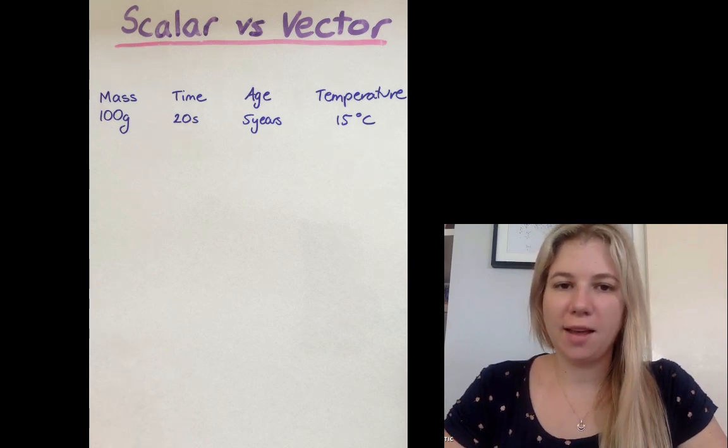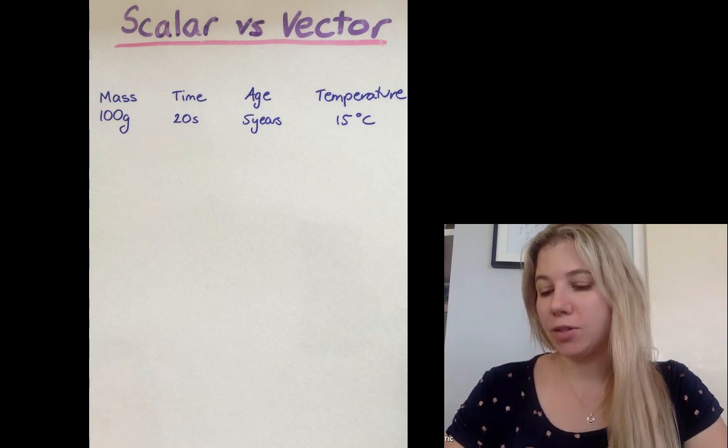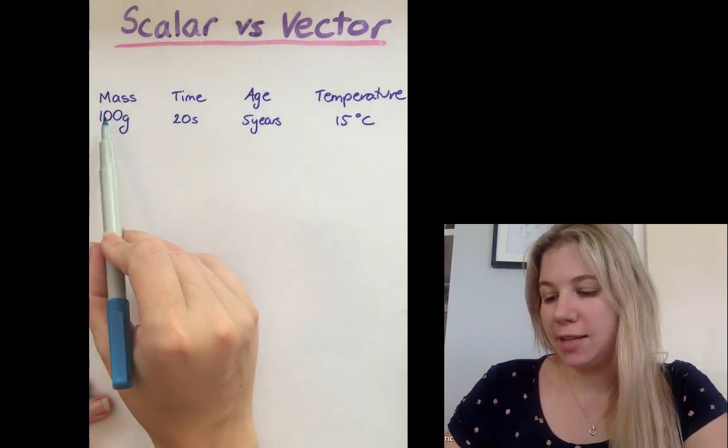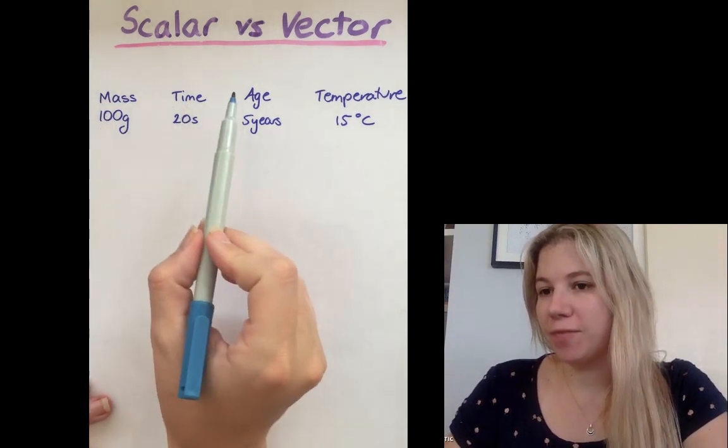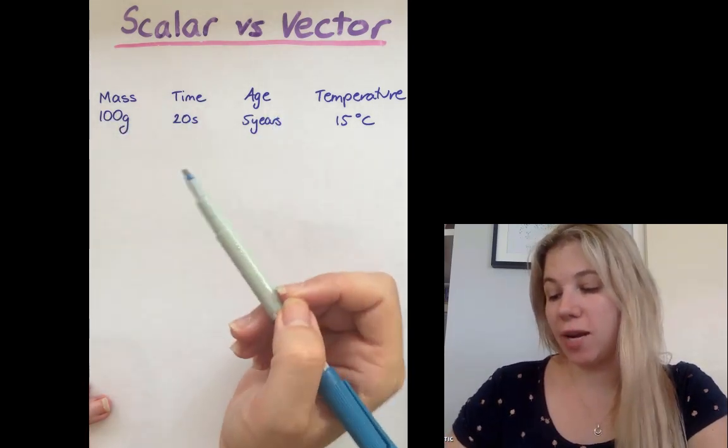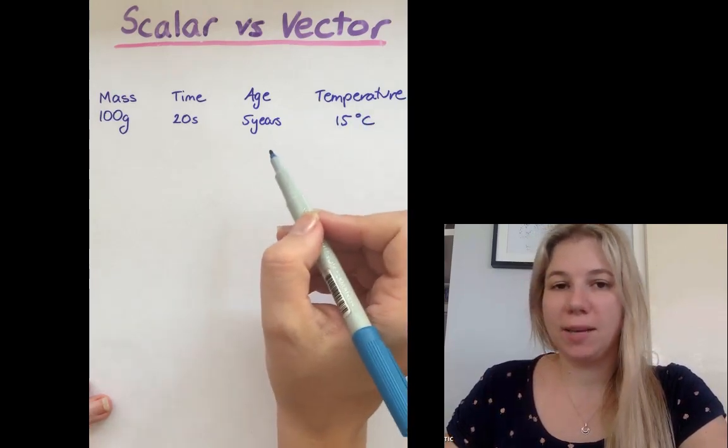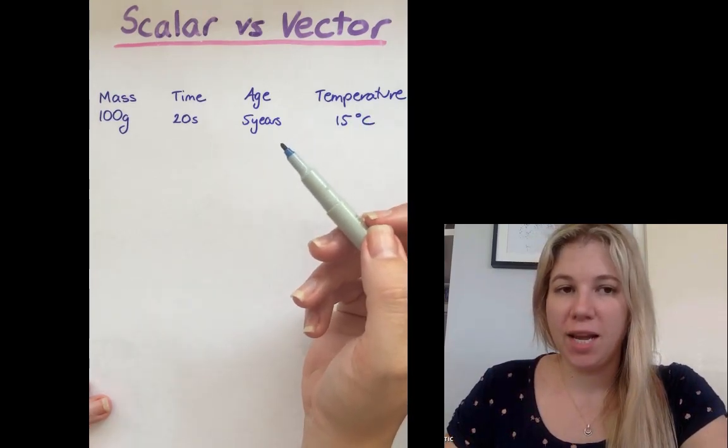Today's lesson we're going to look at scalar and vector quantities and what that actually means in physics. If we have a look here at these different amounts of things, we've got mass, 100 grams, time, age, and temperature. These are all examples of a scalar quantity.